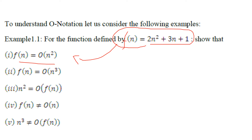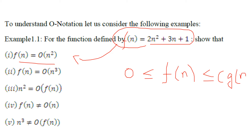Mathematically, you have to show that f(n) is greater than or equal to 0 and less than or equal to c times g(n), and this inequality must be satisfied for all n greater than or equal to n₀. You need to find the positive constant c and n₀ — which means f(n) is asymptotically of the same order of growth or lower than g(n).